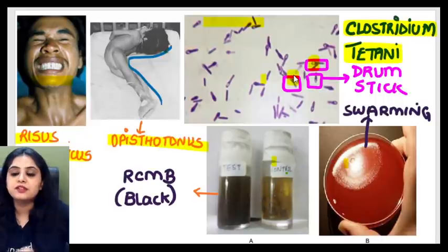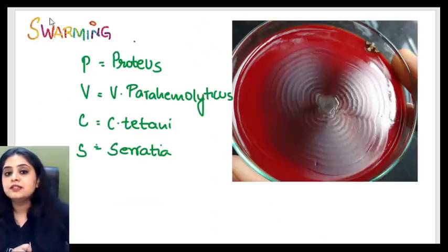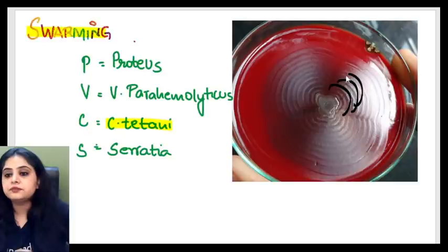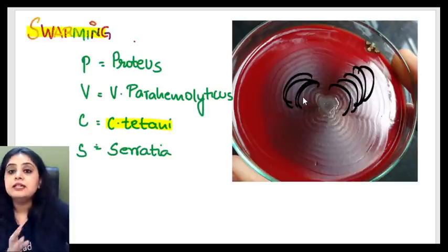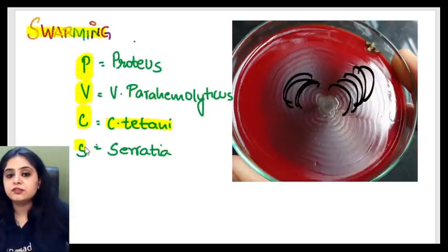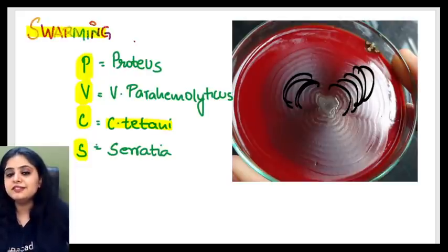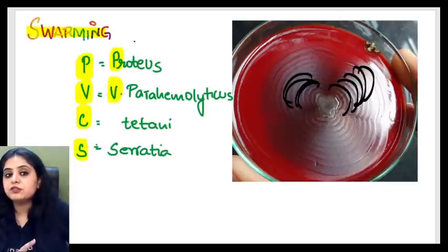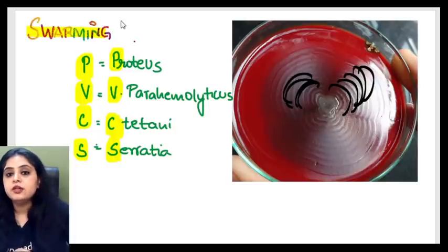Moving to the blood agar picture — this is showing the phenomenon of swarming. Yes, Clostridium tetani can show swarming; you can see the concentric, round-and-round motility. Organisms that can show swarming are remembered by the mnemonic PVCS: P for Proteus, V for Vibrio parahaemolyticus, C for Clostridium tetani, and S for Serratia. So Proteus, Vibrio parahaemolyticus, Clostridium tetani, and Serratia all show swarming.